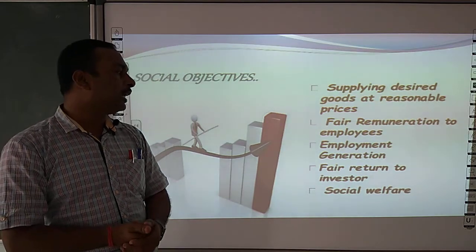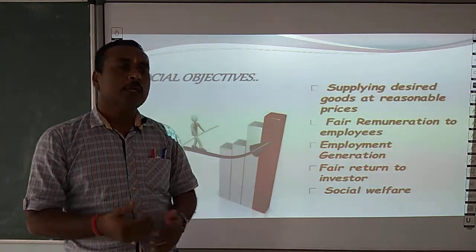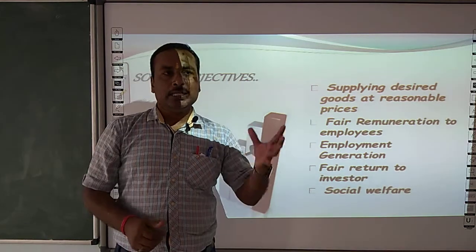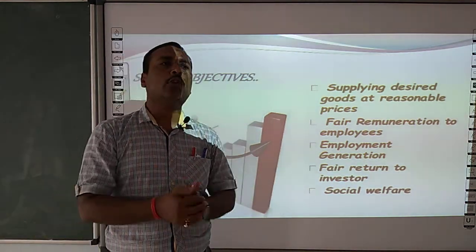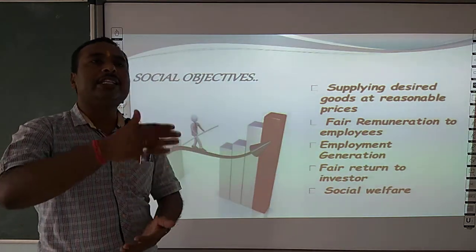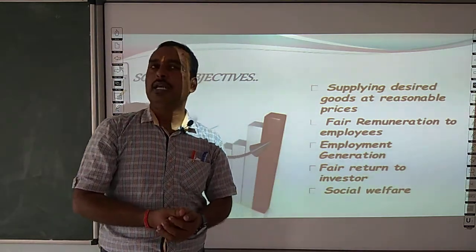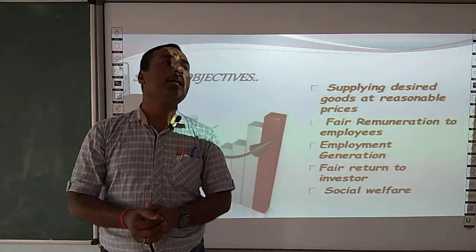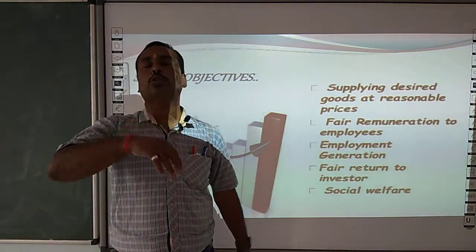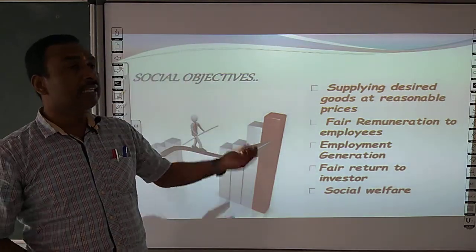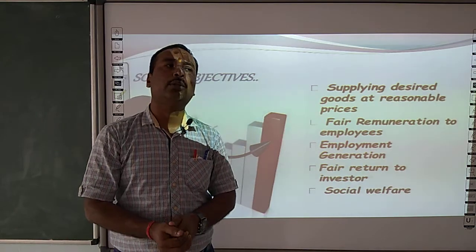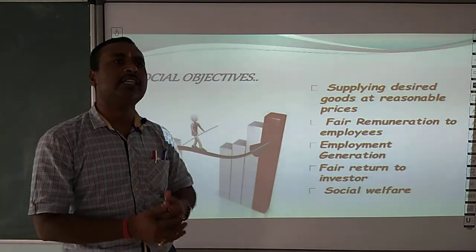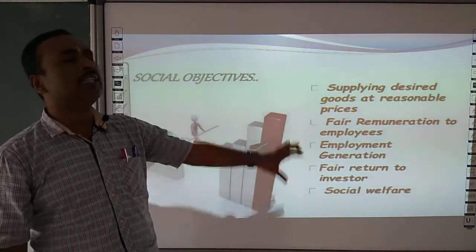Next social objective is fair return to investors — which investors invest in a company, whether in shares, debentures, or loans, they should receive a fair return on their investment. Next is social welfare — if a business organization earns profit and survives, it should contribute to social welfare for society, such as educational facilities, health facilities, and sanitation.